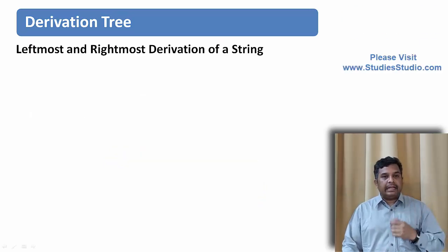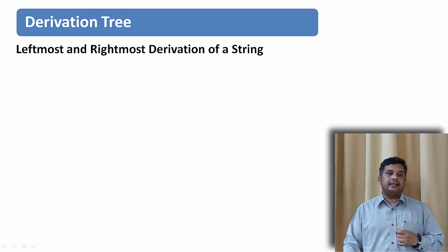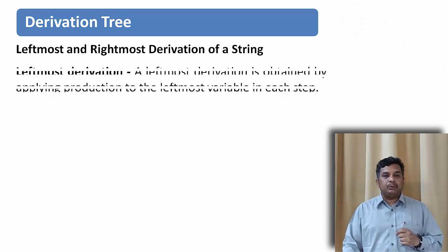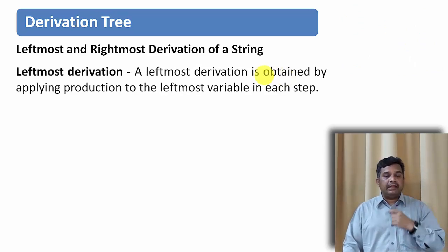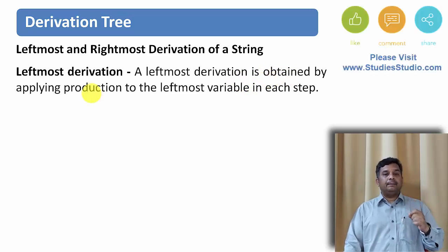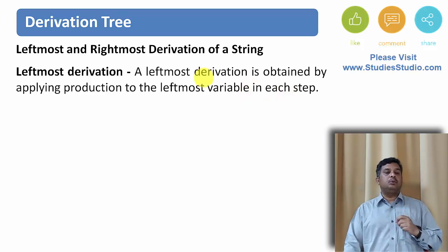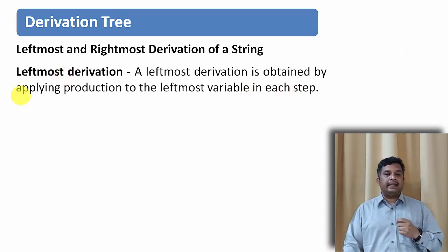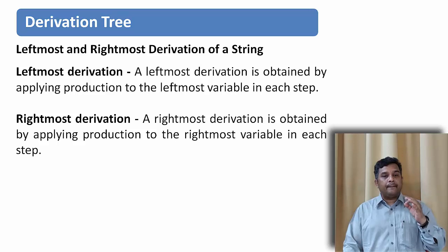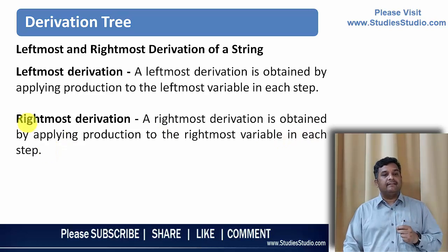To derive a tree we can have two different types of derivation. One is a leftmost derivation and another is a rightmost derivation. In a leftmost derivation, while deriving a string, we apply the production to the leftmost variable in each step. Similarly, in a rightmost derivation, we apply the production to the rightmost variable in each step.